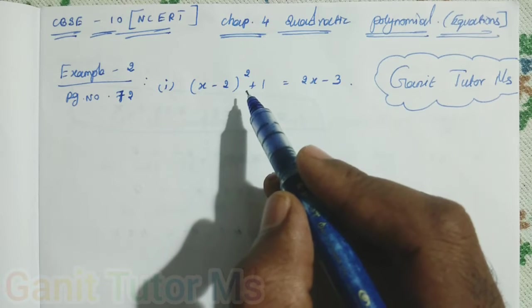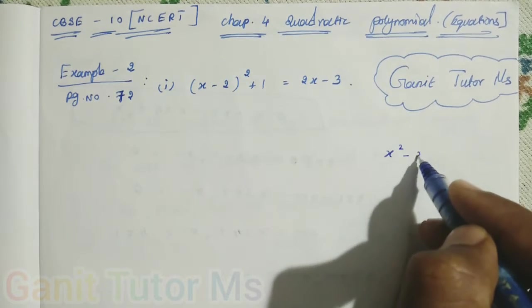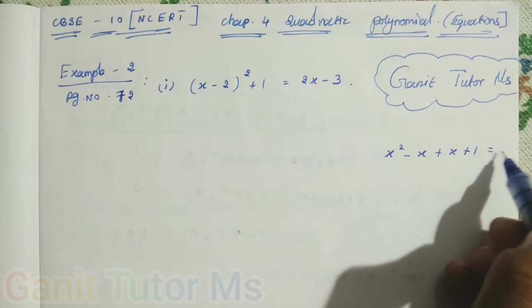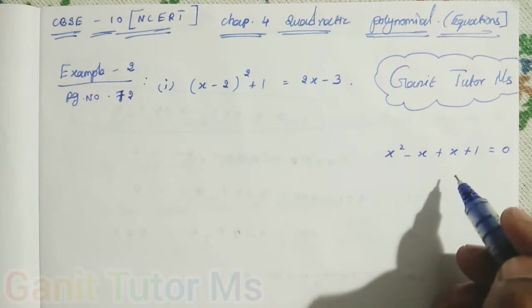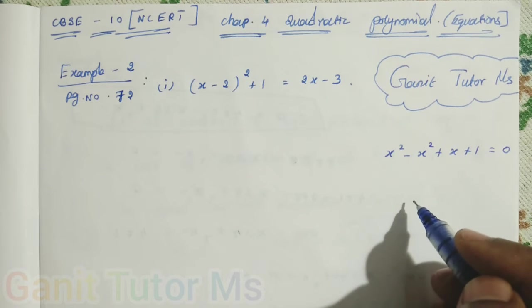For example, x squared minus x squared plus x plus 1 equal to 0. Now, you can tell me, here is x squared. Now, you can tell me it is a quadratic equation or not.